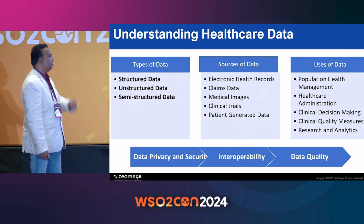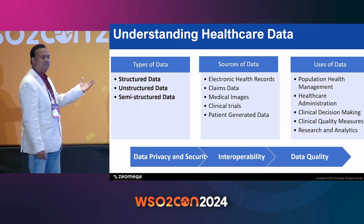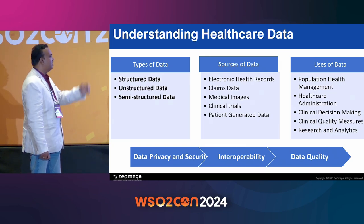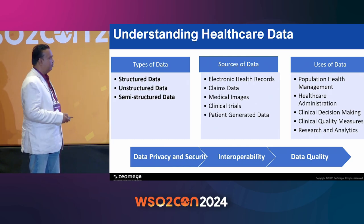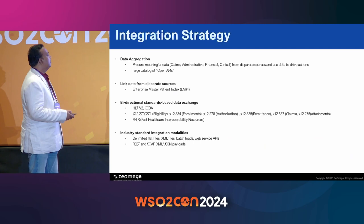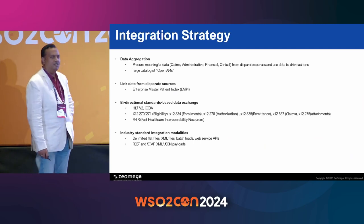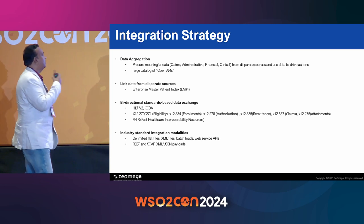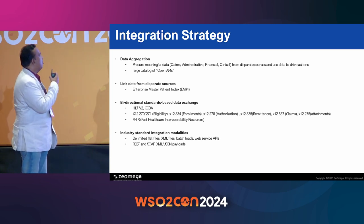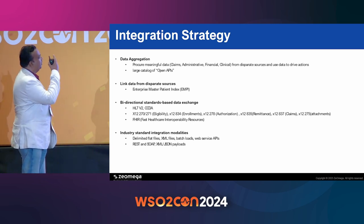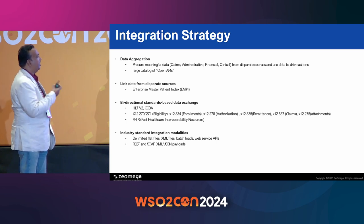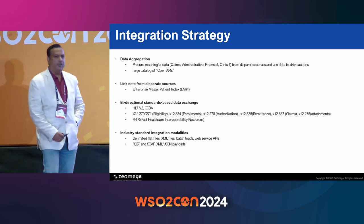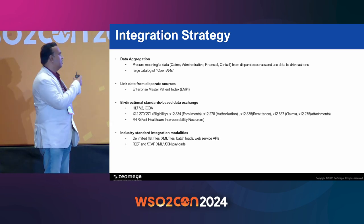Healthcare software vendors are trying to come up with different integration strategies — how to aggregate claims data, administrative data, financial data, and clinical data. The challenge is uniqueness: how do we identify the uniqueness of a member? How do we exchange data within standards? There are standards like HL7, CCDA, and X12 which is mainly for financial transactions, and recently FHIR — Fast Healthcare Interoperability Resources.